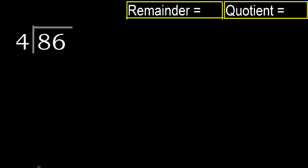86 divided by 4. Starting with 8: 4 multiplied by which number is nearest to 8 but not greater? 4 multiplied by 3 is 12, which is greater. 4 multiplied by 2 is 8, which is not greater. 8 minus 8 equals 0.